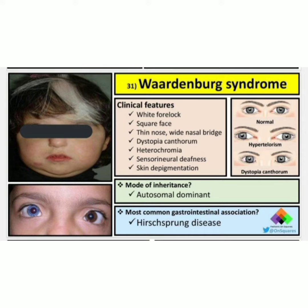So how does a Waardenburg syndrome patient present? The clinical features are: white forelock, square face, thin nose, white nasal bridge, dystopia canthorum, heterochromia, sensorineural deafness, and skin depigmentation.